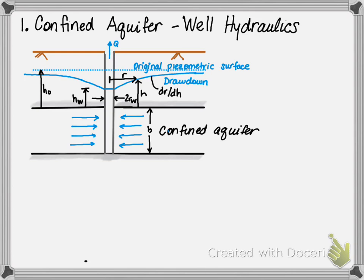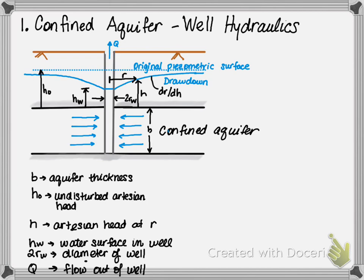From this schematic, the following terms can be defined. B is the thickness of the confined aquifer. H0 is the undisturbed artesian head, referred to as the pieziometric surface and the water table. These three terms can be interchangeable.